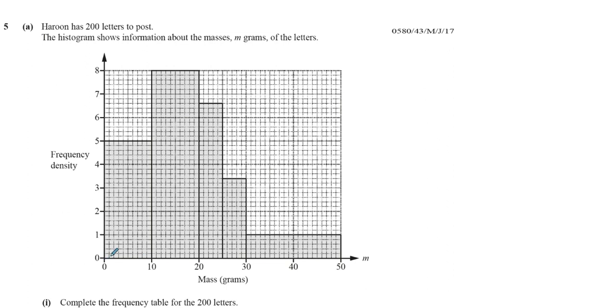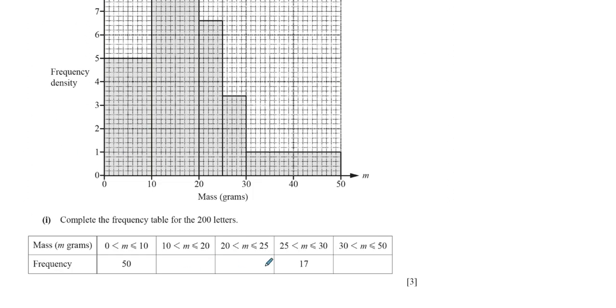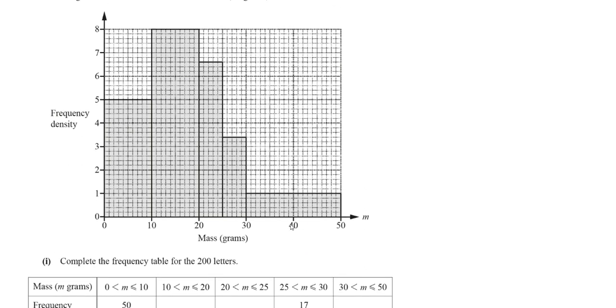So all the letters between 0 and 10 grams are represented by this bar. All the letters between 10 and 20 grams are represented by this bar, and so on. So what we have to do is fill out this frequency table based upon this histogram.